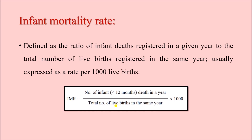Next is infant mortality rate — very important. An infant is any child less than one year (12 months) of age. Infant mortality rate is a ratio: the ratio of infant deaths registered in a given year to the total number of live births registered in the same year. In the denominator we have total live births in the same year, and we express it as per thousand live births, multiplying by 1000.